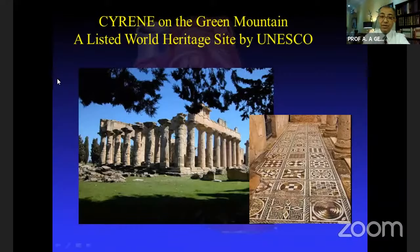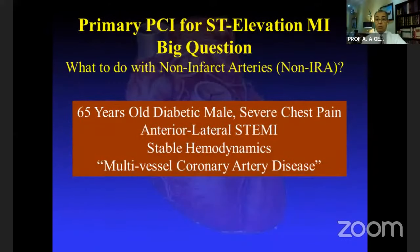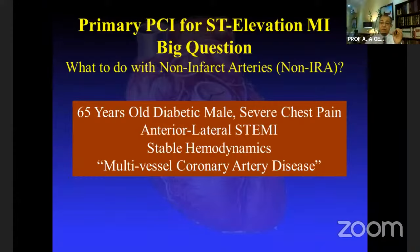Cyrene (Shahat) in the Green Mountain is one of the UNESCO-listed sites and has one of the oldest mosaics, much of which is preserved.